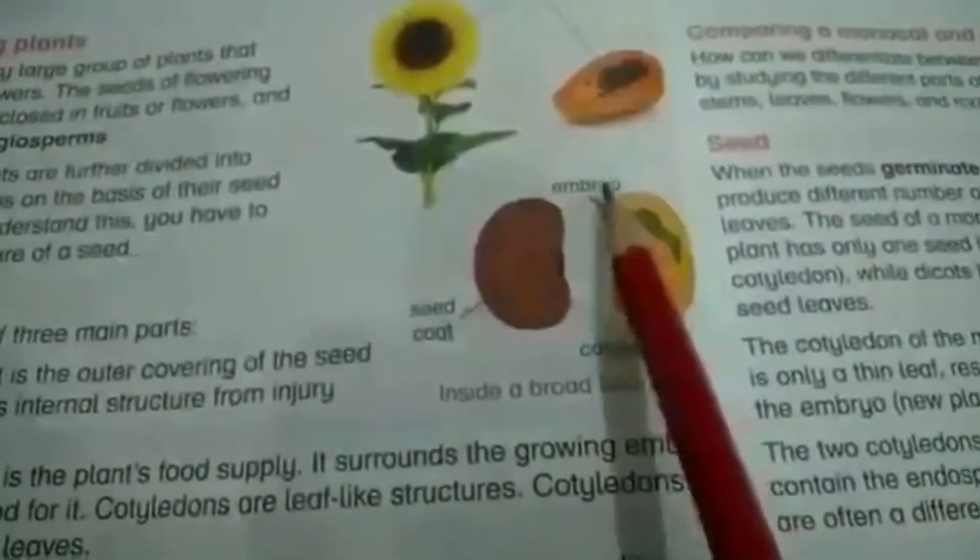What are the functions of these three parts? First, the seed coat basically protects the internal structure of a seed. The cotyledon provides nutrients or food to the embryo. The embryo is basically a baby plant that grows further into a mature plant. The seed coat is the outer covering of the seed that protects its internal structure from injury and drying out during a shortage of water. The cotyledon is the plant's food supply — it surrounds the growing embryo and provides food for it. Cotyledons are leaf-like structures, also called seed leaves. The embryo is the baby plant that grows into a new plant when proper amounts of oxygen, water, and sunlight are provided.